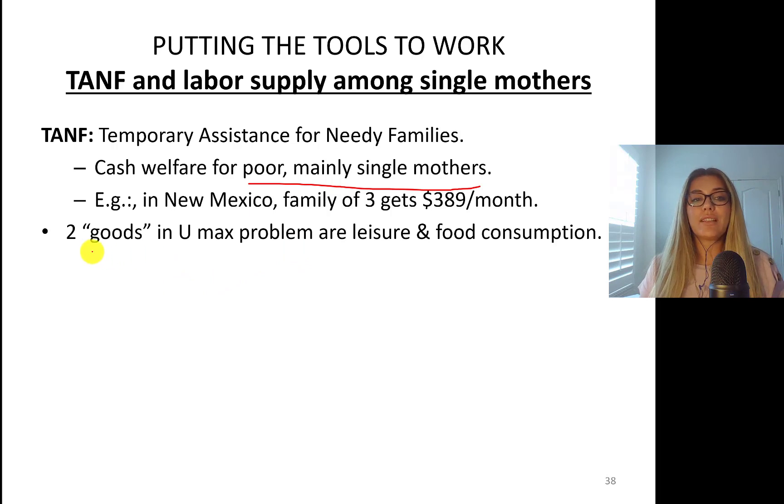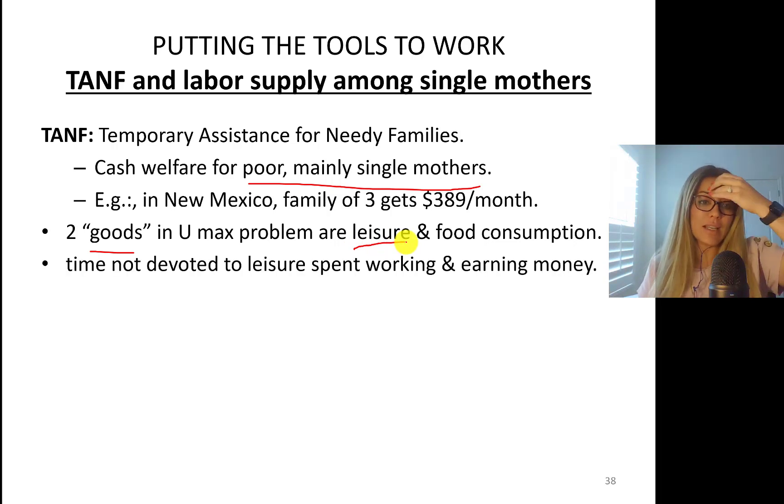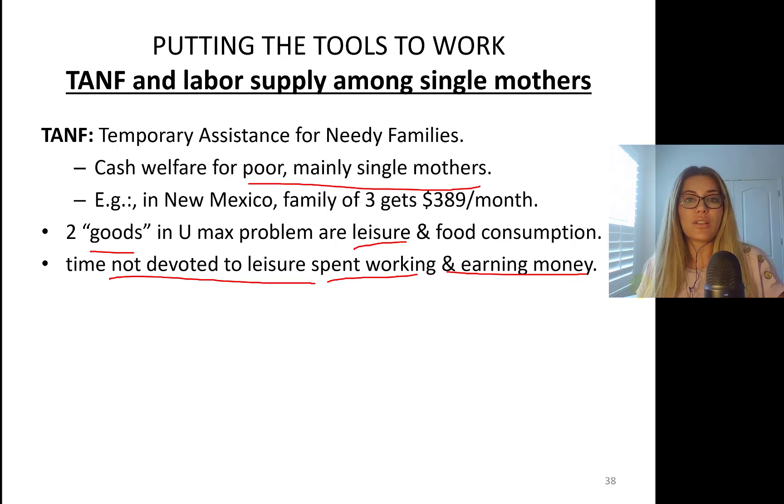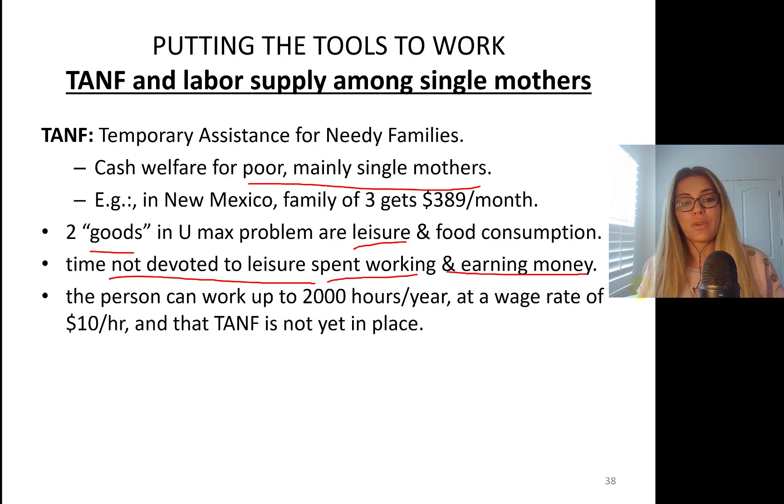All right, so we are going to have two goods in the utility maximization problem. These goods are going to be leisure - the number of free hours you have - and food consumption. Time not devoted to leisure will be spent working and earning money in this model.